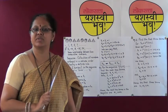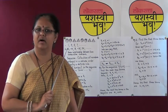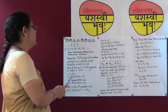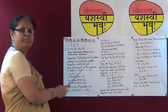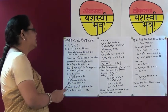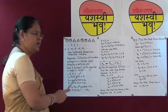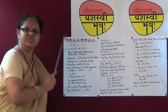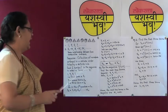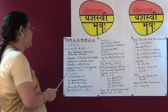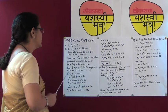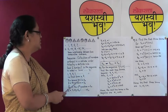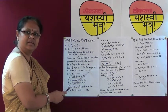A sequence is a collection of numbers arranged in a definite order following a definite rule, as we have seen just now. Each number in the sequence is called a term, which is denoted as small t.